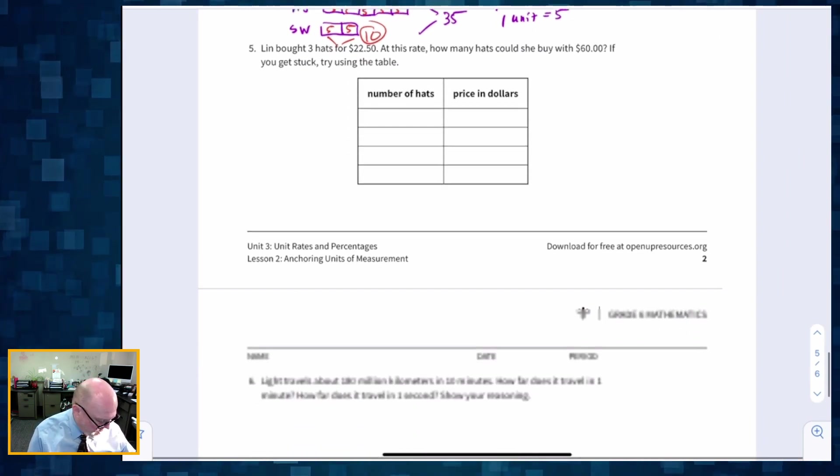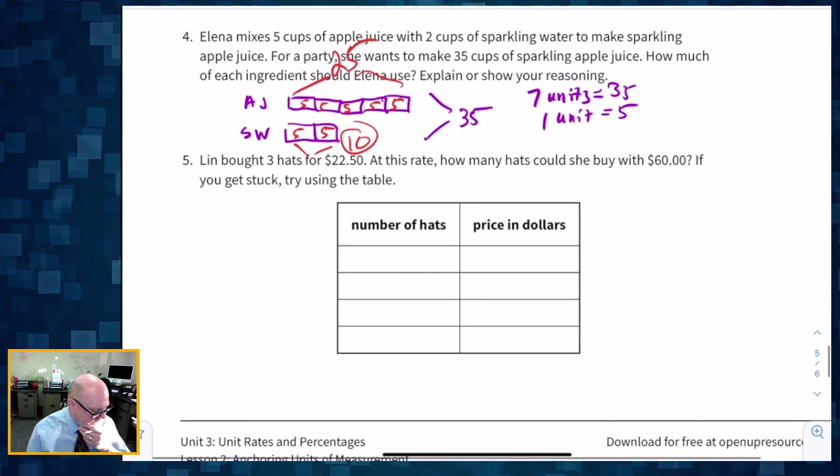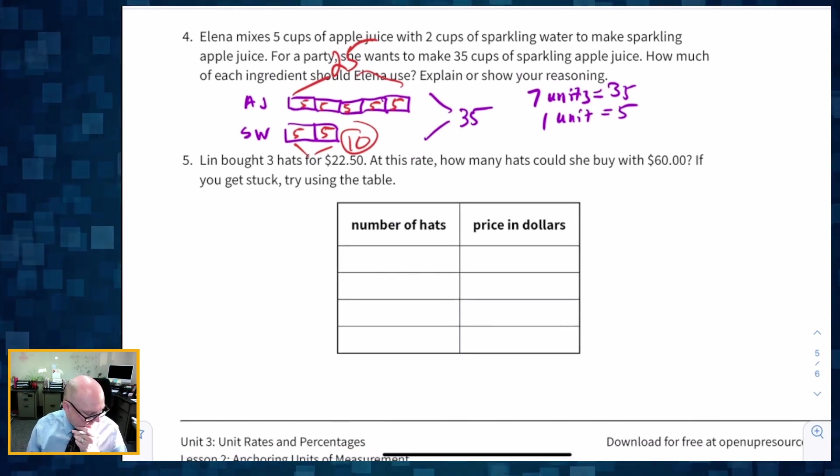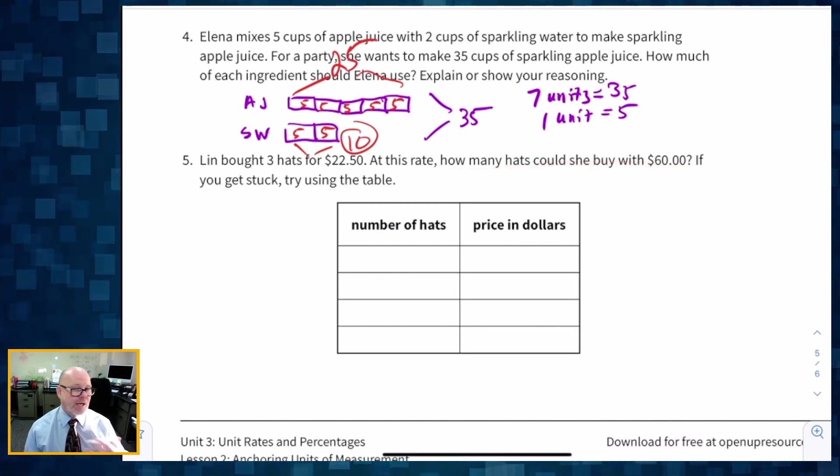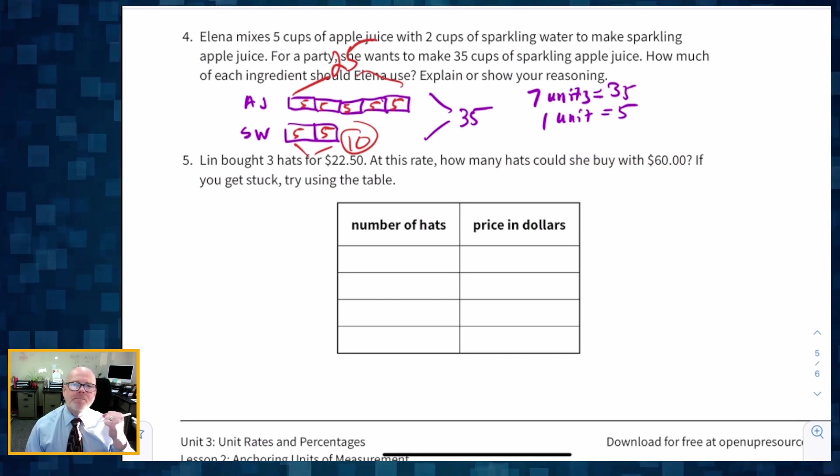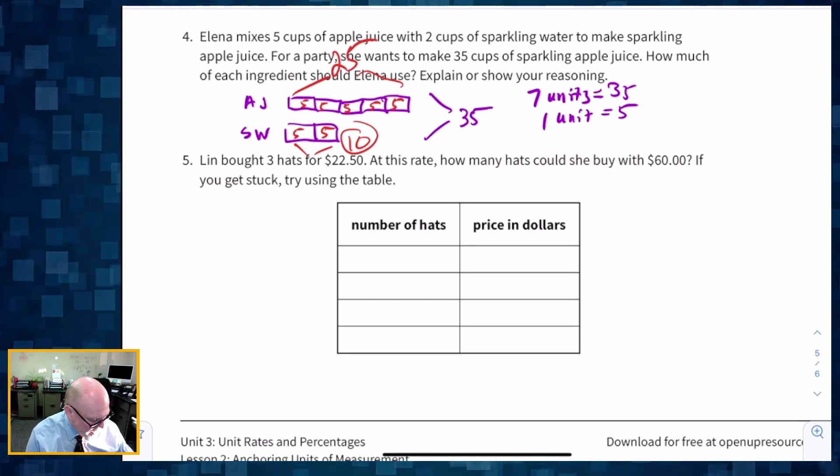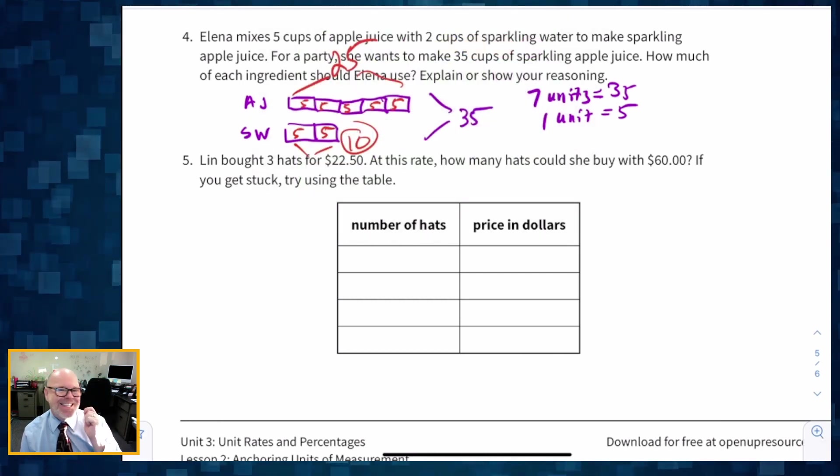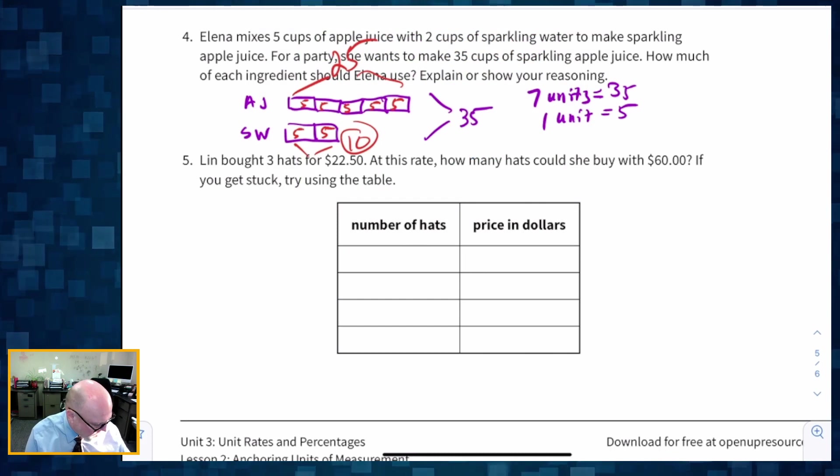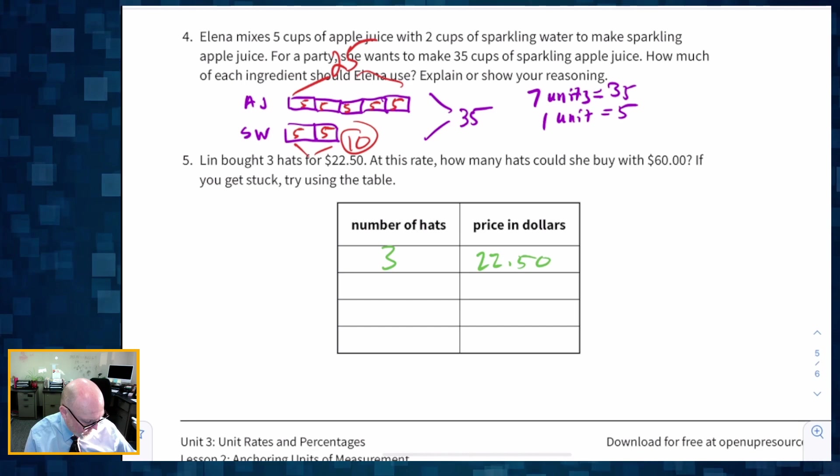And then moving, we're getting there. Number five, Lynn bought three hats for $22.50. At this rate, how many hats could she buy with 60 bucks? And if you get stuck, use a table. I'm always going to use a table because I love using tables, especially because these tables lead perfectly into the kind of math we're going to be doing in seventh grade with proportions. So I'm going to put it in a table, three hats, $22.50.